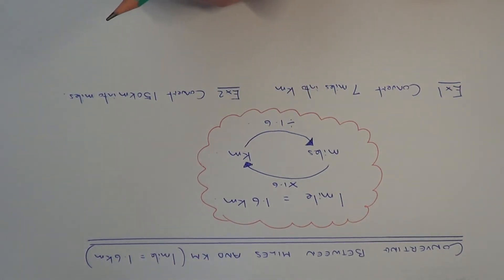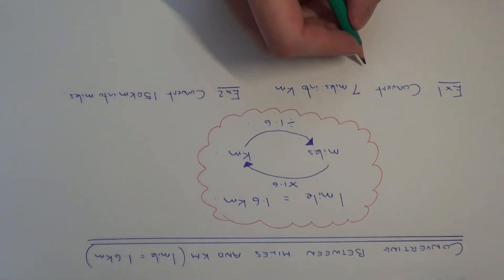So let's have a look at example one. So we need to convert seven miles into kilometres. So miles to kilometres then we need to multiply by 1.6. So we need to work out seven times 1.6.